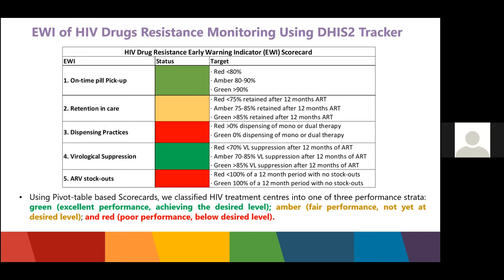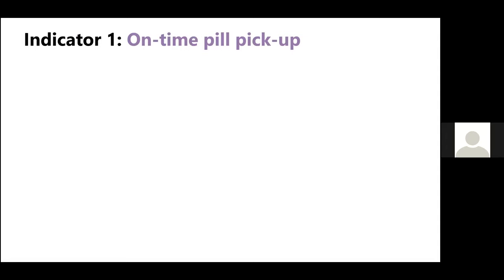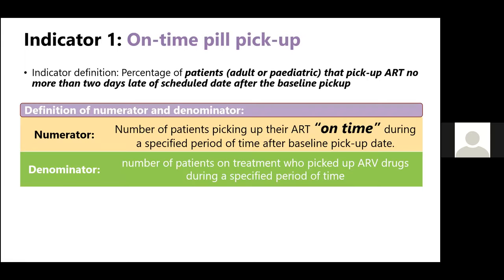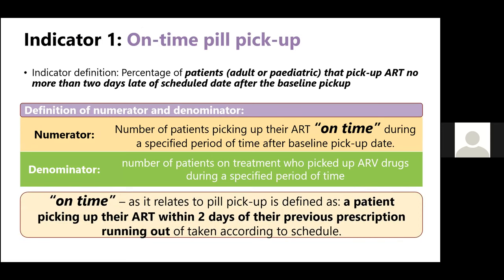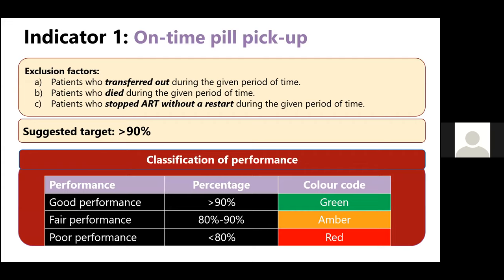For indicator one, on-time pill pickup, the target is more than 90%, meaning if there are 100 patients enrolled in treatment, more than 90 should pick up their pill on time. If below that target, patients at the site are at risk of HIV drug resistance emergence. The target is more than 85% for retention in care, and similarly more than 85% for viral load suppression. Additionally, 100% of ART sites should ensure no ARV stockouts. Slides 7 through 17 provide detailed definitions of numerators and denominators for each indicator.